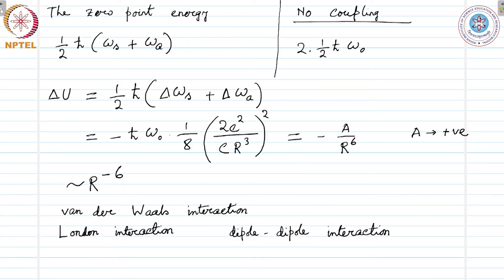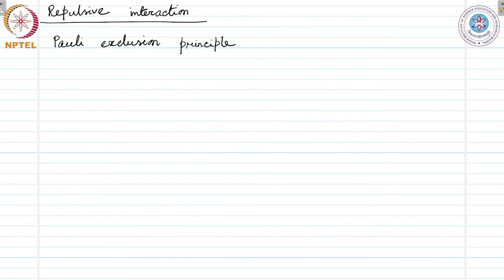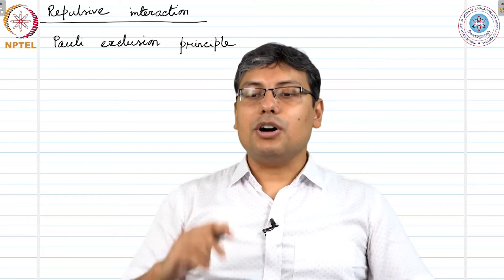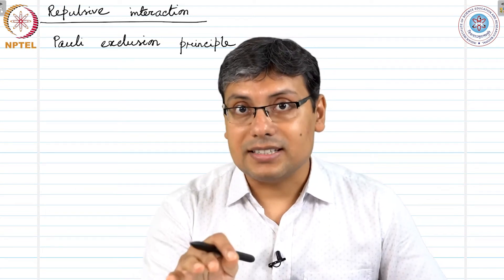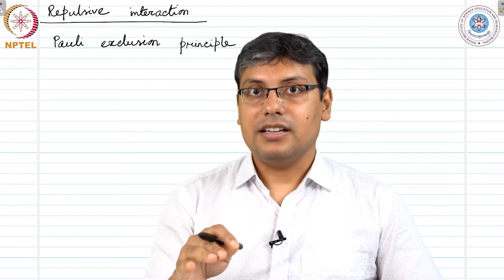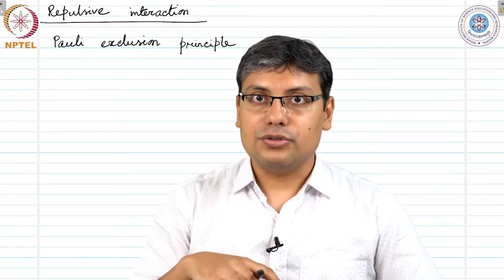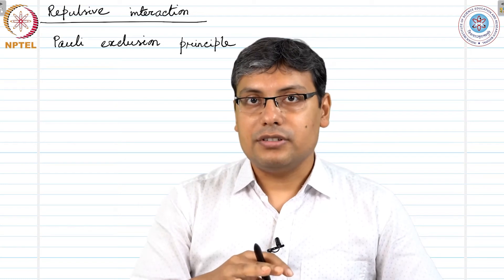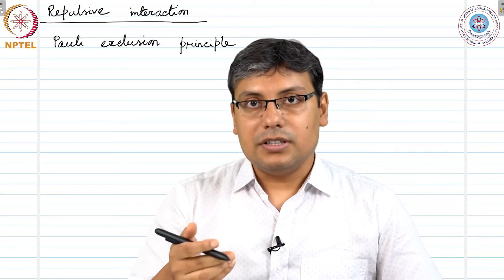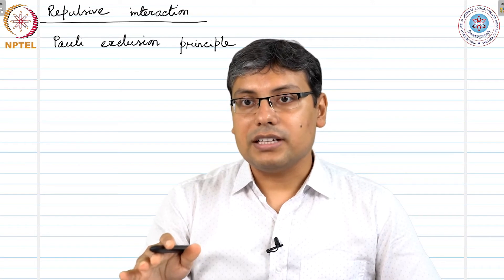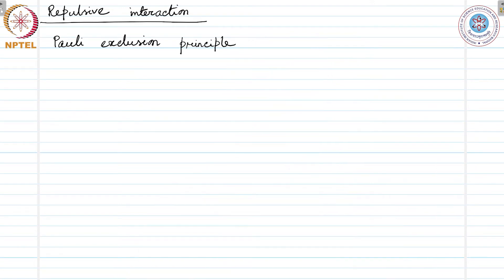We have the van der Waals interaction that goes as r^-6, which does not make all atoms collapse onto each other because of Pauli exclusion principle. Pauli exclusion principle does not exist in classical mechanics; it is only of quantum nature. This repulsive interaction has only quantum origin; there is no way to explain this in classical mechanics.